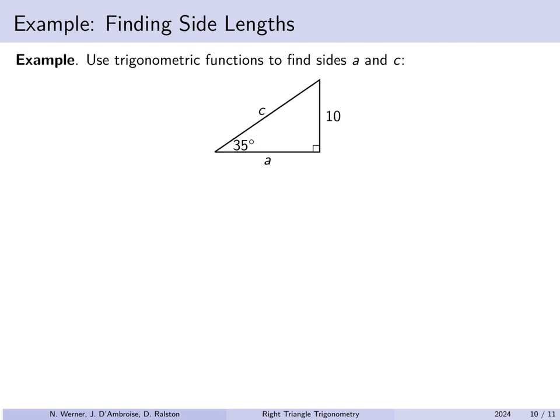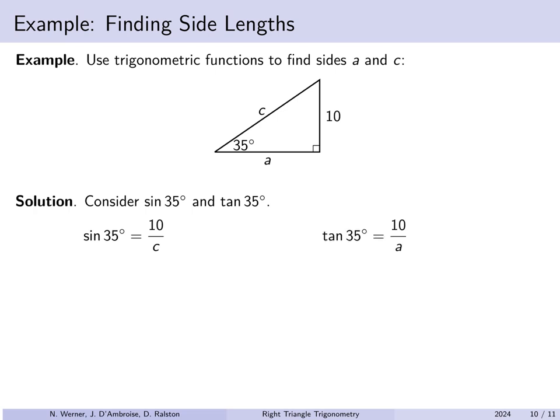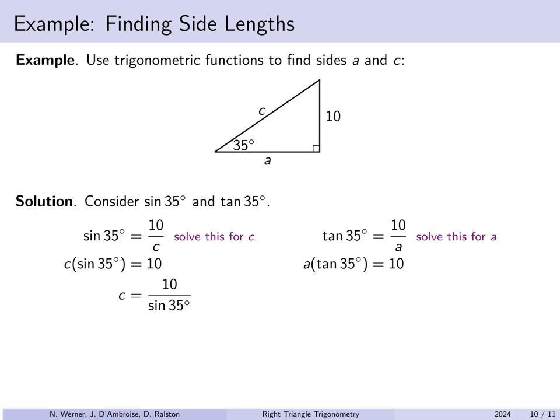We can also use trigonometric functions to solve for side lengths in a triangle. Here we have a right triangle with an angle of 35 degrees, opposite side length 10, unknown adjacent side a, and unknown hypotenuse c. The sine of 35 degrees equals 10 over c, and the tangent of 35 degrees equals 10 over a. Solving these gives c equals 10 over sine of 35 degrees and a equals 10 over tangent of 35 degrees.